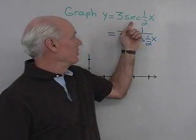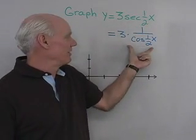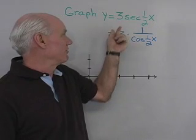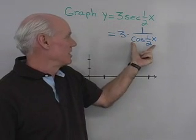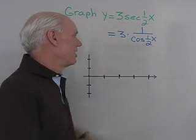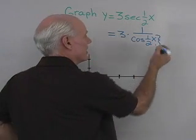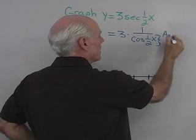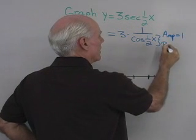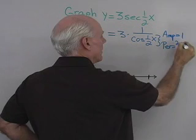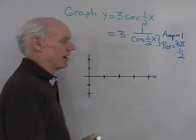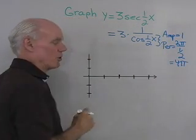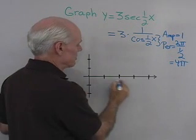Let's look at more graphs. This function is y = 3 sec(½x). I'll use the reciprocal relationship and write the secant as the reciprocal of cosine, so it's 3 times 1 over cos(½x). I want to graph the cosine function first, then take its reciprocal, then multiply by 3. This cosine function has an amplitude of 1 and a period of 2pi divided by ½, which is 4pi.